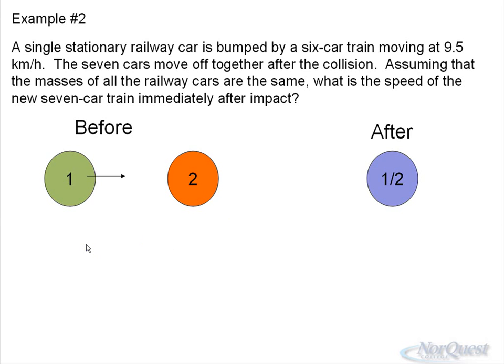What makes this tricky is they don't give you mass, but I have a single car train stationary. So the first thing is the mass of object 2 is the single car, which I'm going to define as x kilograms. Its velocity is stationary, so it's 0 meters per second.